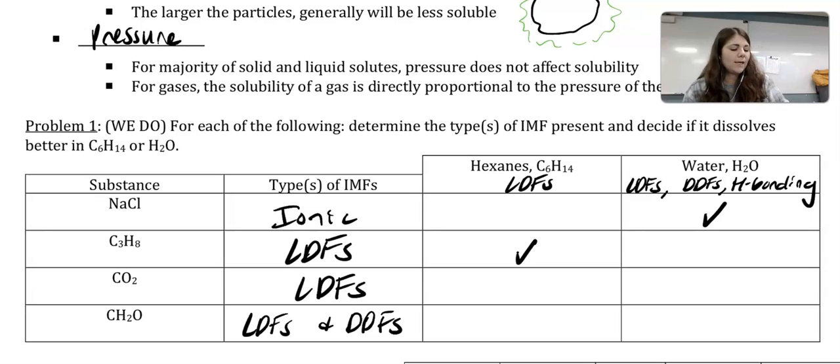Next, CO2 only has LDFs, so the hexane will be the better choice. And then lastly CH2O, since it is polar, we want the polar molecule which was water.